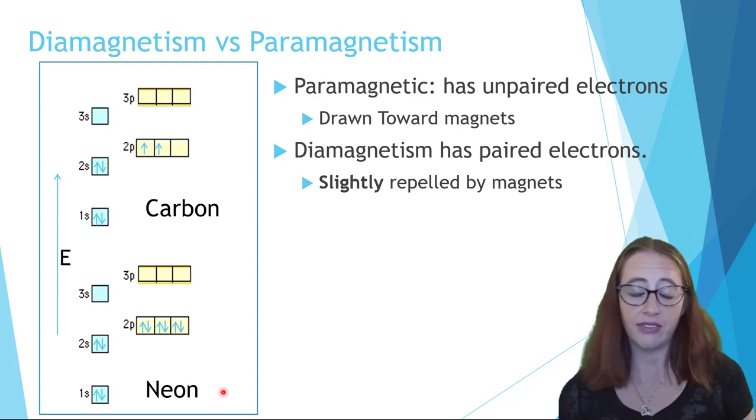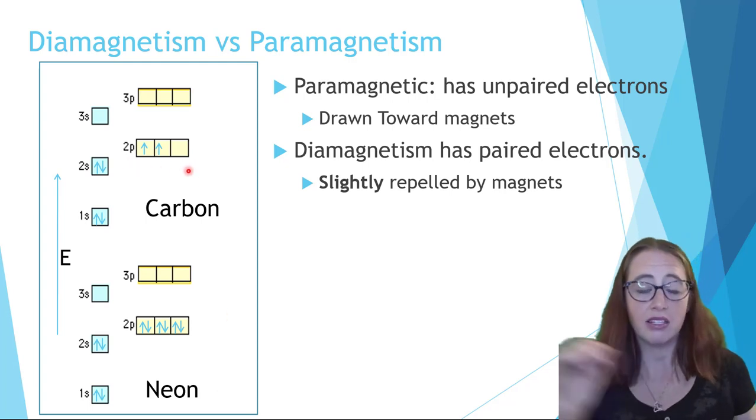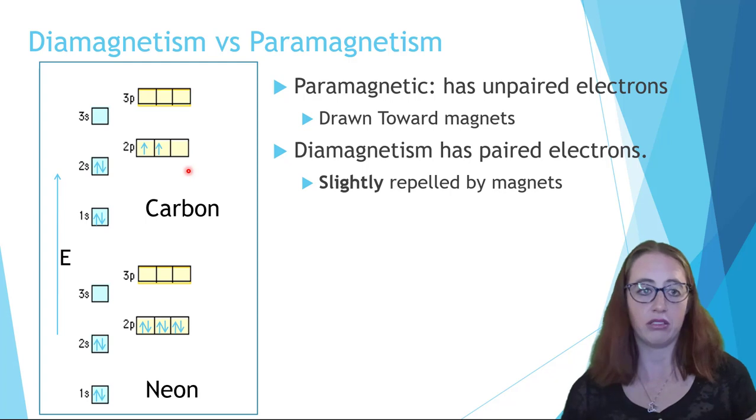Carbon has four electrons in its valence shell. It has six electrons total. But because of the rules of filling going across the orbitals first rather than doubling up first, carbon is going to have two unpaired electrons.